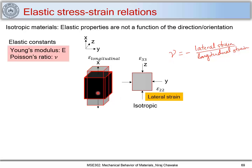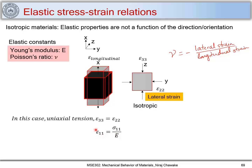Now let's look at the relation of these strains with stresses. We are considering uniaxial tension, and we have epsilon 3 3 equal to epsilon 2 2 because the material is isotropic. I can write epsilon 1 1 in terms of Young's modulus and the normal stress sigma 1 1 as: epsilon 1 1 equals sigma 1 1 upon E, where E is Young's modulus.